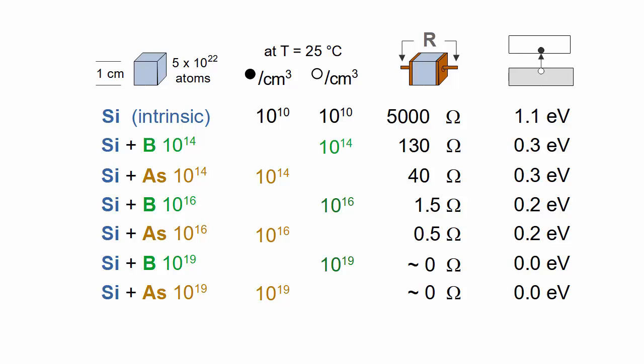The table shows the concentrations of the majority charge carriers, the ones created by dopant atoms. Minority charge carriers, having the opposite charge, are still created by thermal energy and are important in diodes and other devices. Their numbers are reduced by recombination with majority carriers.